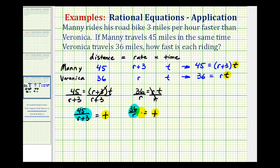Again, if the t's are equal to each other, then these fractions must also be equal to each other. So if we write the equation 45 divided by r plus three equals 36 divided by r, notice now we have an equation with one variable, and since we have a proportion, we can eliminate the fractions by cross-multiplying.